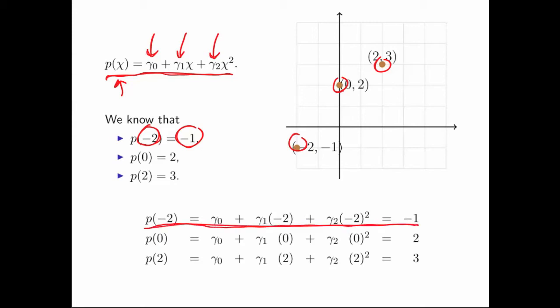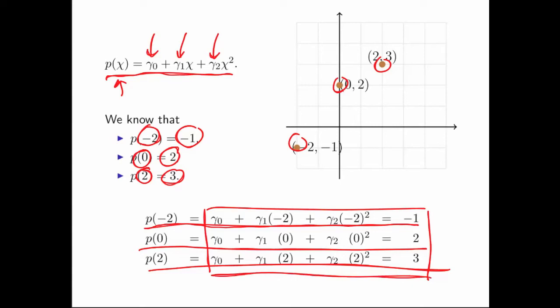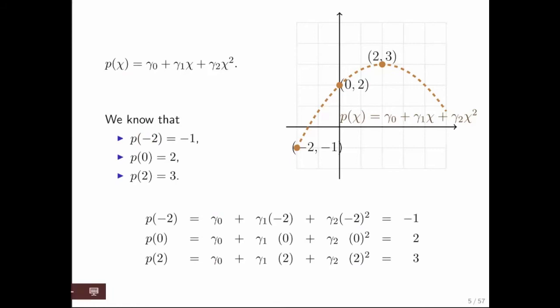That allows us to set up the first equation. When we plug in zero, we should get two — that gives us the second equation. And then finally, when we plug in two, we should get three — that gives us the third equation. What we therefore have is a linear system with three equations and three unknowns, where the unknown vector c has components gamma 0, gamma 1, and gamma 2. If we determine those coefficients, we will find the polynomial that passes through all of these points.